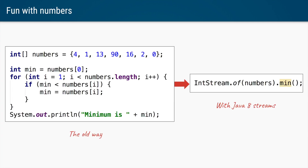Let's start with an example. Let's say we have an array of integers called numbers and we want to find the minimum number from this array. One way to do it is you create a variable called min, assign it as the first integer, then loop through the entire array — any number which is smaller gets assigned to min. Once we have that minimum, we can process it, in this case just printing it to the console.